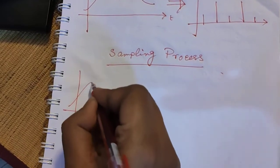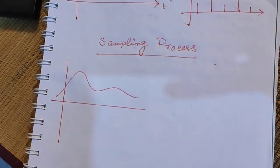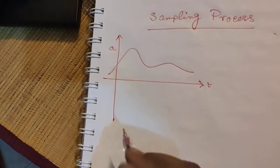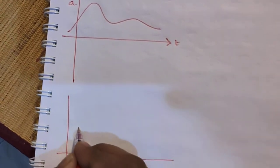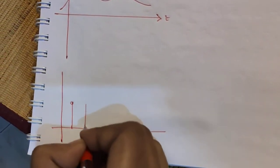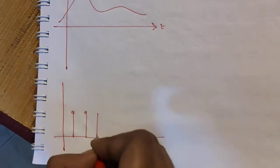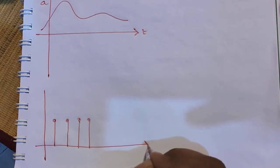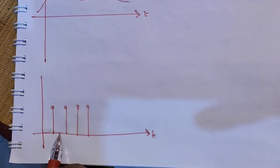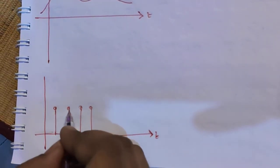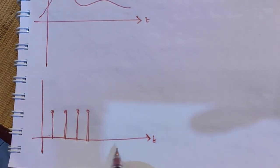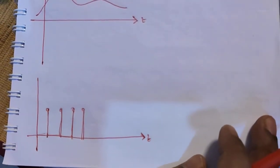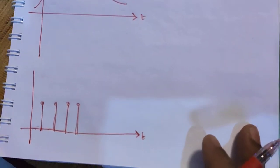Suppose this is our original analog signal — this is the time axis and this is the amplitude. Now I am generating a unit pulse train. What is a unit pulse train? After a certain time period, there will be a unit pulse whose magnitude is one, and there is no value between two consecutive pulses. So we only have discrete pulse values at certain points in time, depending upon the frequency of this pulse train. This signal is known as the sampling signal and the frequency of this signal is known as the sampling frequency.